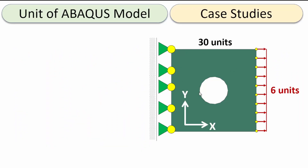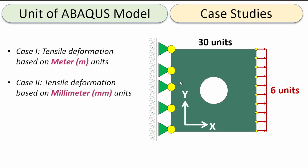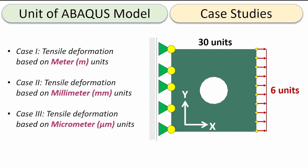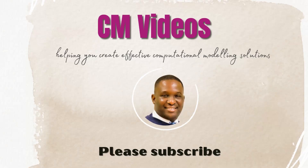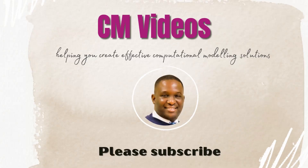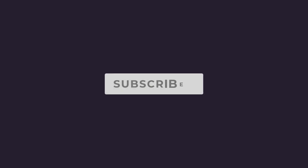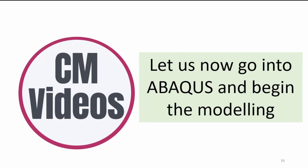The case study uses this specimen fixed completely at the back with a constant displacement of six units applied at the front. Case 1 is tensile deformation in meters, Case 2 in millimeters, and Case 3 in micrometers. We'll compare the results at the end. If you like this content, please subscribe so you're the first to see new videos.